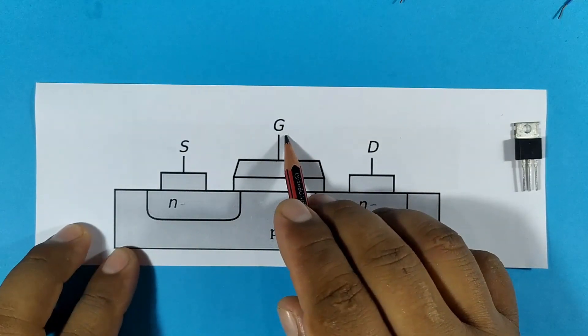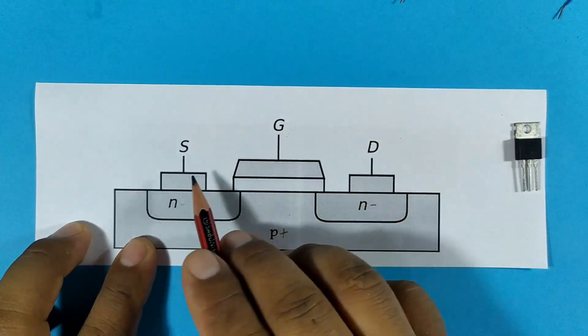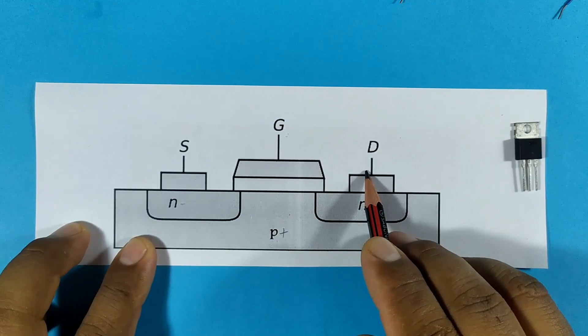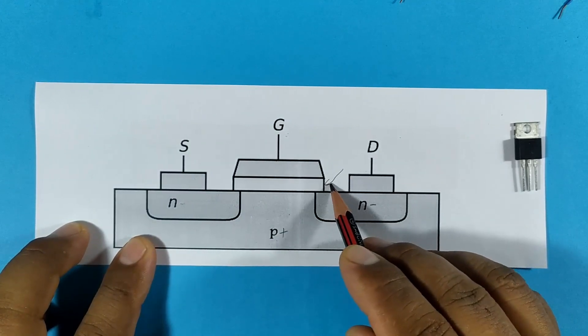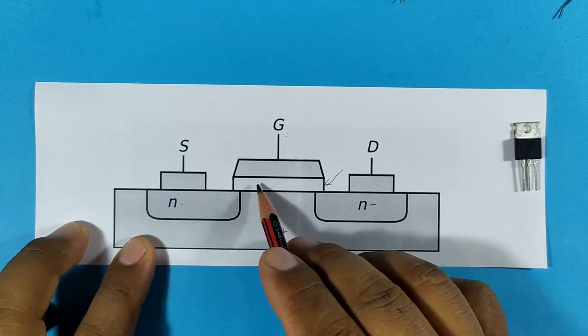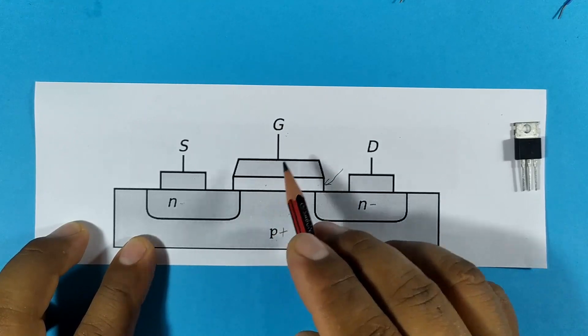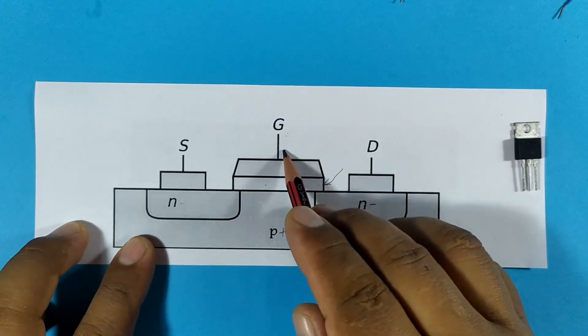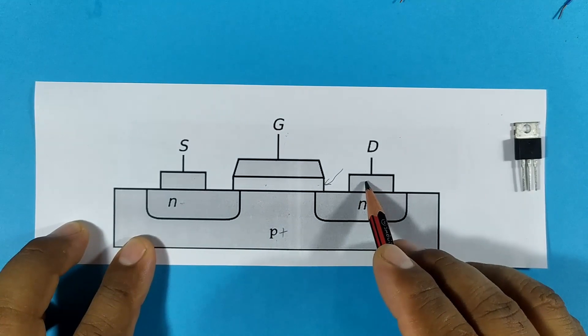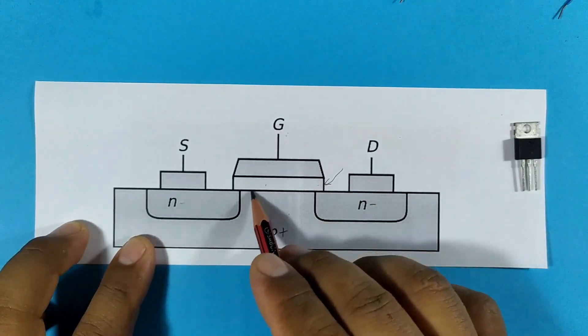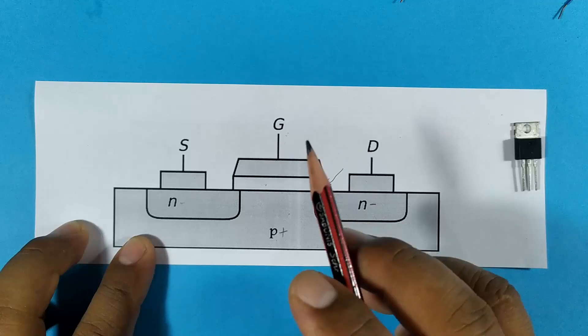Since at this moment we have a high resistance between drain and source. The gate in this case is isolated from the source and from the drain, since it has a layer here which is an insulator. This does not allow current to flow from the gate to the drain or from the gate to the source. There is no current.